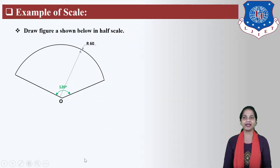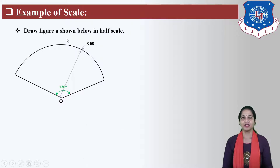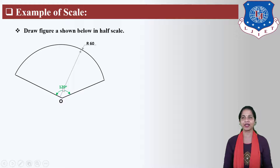Next, let us take one example of Scale. Draw the figure as shown below in half scale. Here, one figure is given. The angle between the two radial lines is 120 degrees and the radius of the arc is 60 mm.